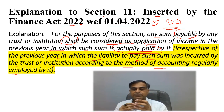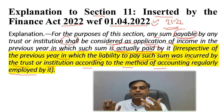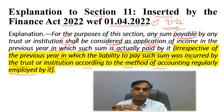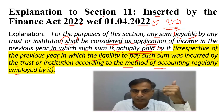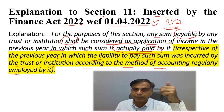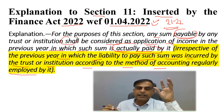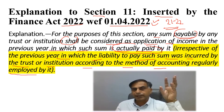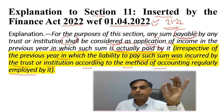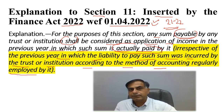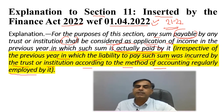Now someone may ask: if an expenditure which is due but not paid cannot be claimed as application of income in the current year, can it be claimed in the year in which it will actually be paid? Yes, you can claim it in the year in which it is actually paid. So irrespective of the method of accounting, the real payment is very important under this amendment made in Section 11 by the Finance Act 2022.